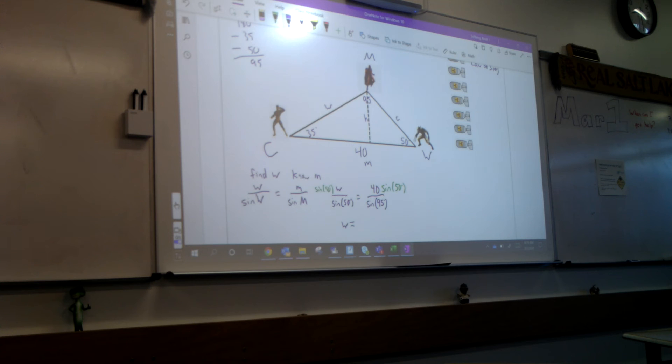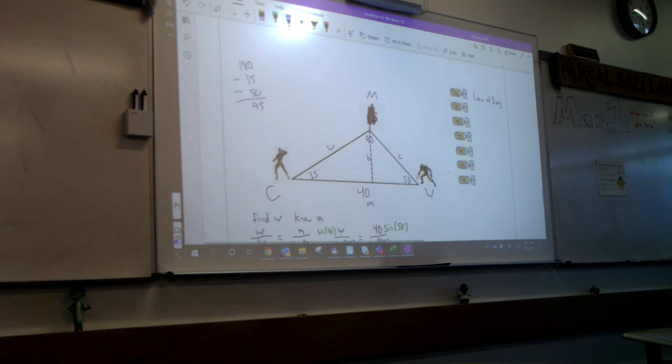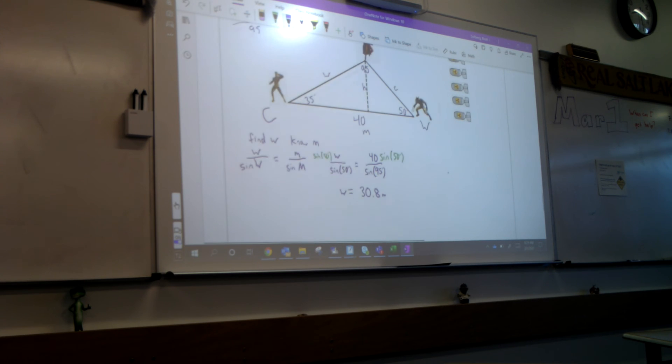That should give us W. When someone has it, 40 sine of 50 over the sine of 95, shout it out, what did you get? 30.8, does that work? And these are meters. Awesome.